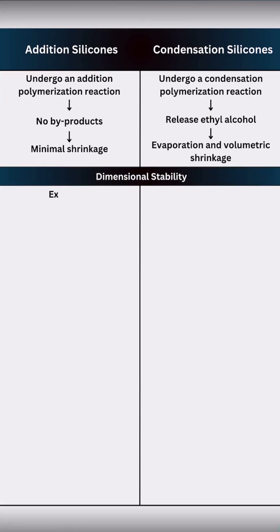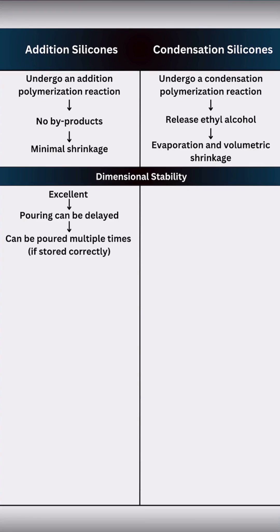Addition silicones have excellent dimensional stability and a long shelf life, so pouring can be delayed and casts can be poured multiple times if the impression is stored well. Condensation silicones are less stable and must be poured immediately, allowing for only a single pour, with a shorter shelf life due to their sensitivity to humidity.